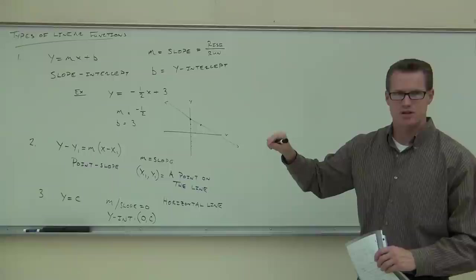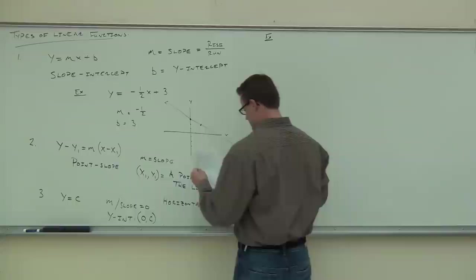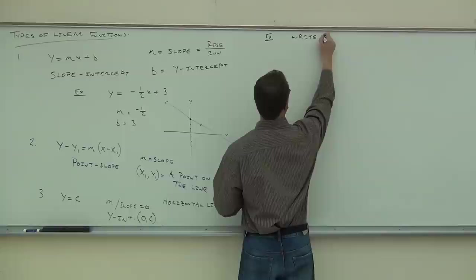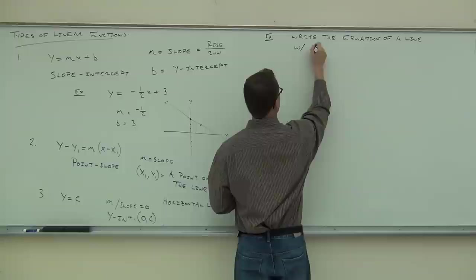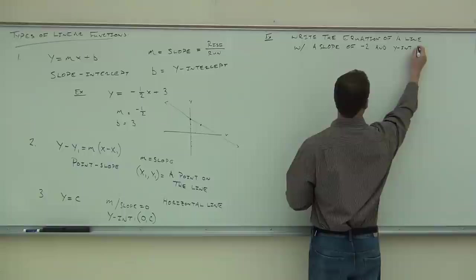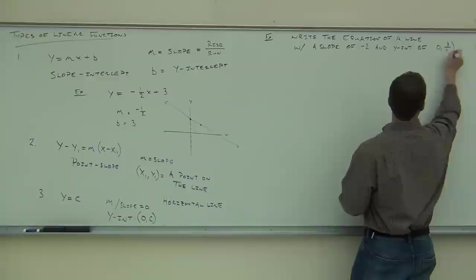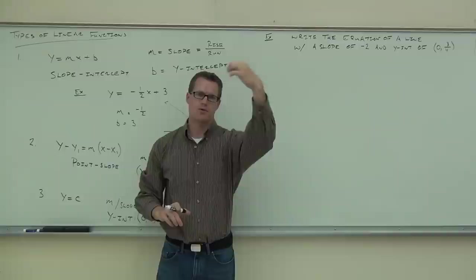Let's try something fast to make sure you understand these forms. Let's see if we can write the equation that has a slope of negative two and a y-intercept of zero comma three-fourths. The zero comma three-fourths just says you're on the y-axis. The zero says you're going over on the x, and the three-fourths says you're going up three-fourths on the y. So that, therefore, is our y-intercept.